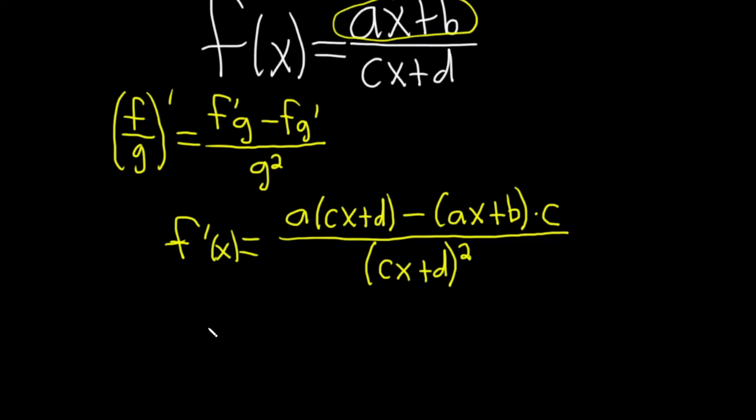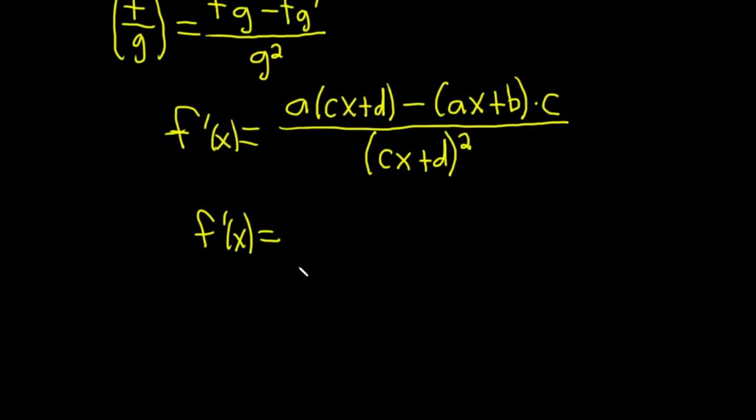Okay, let's see if we can clean this up. So f prime of x is equal to, it looks like we can distribute the a here, so we would get a times cx, that's acx, and then a times d, so plus ad.